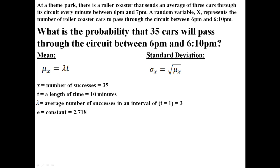e is a constant which is 2.718. This is from the example in the last lecture, but we're not going to need all of those things — we just need lambda and t for the mean. We would multiply lambda, which is 3, times t, which is 10, and get 30. So the mean for this Poisson random variable is 30. The standard deviation is just the square root of that, which is 5.477.